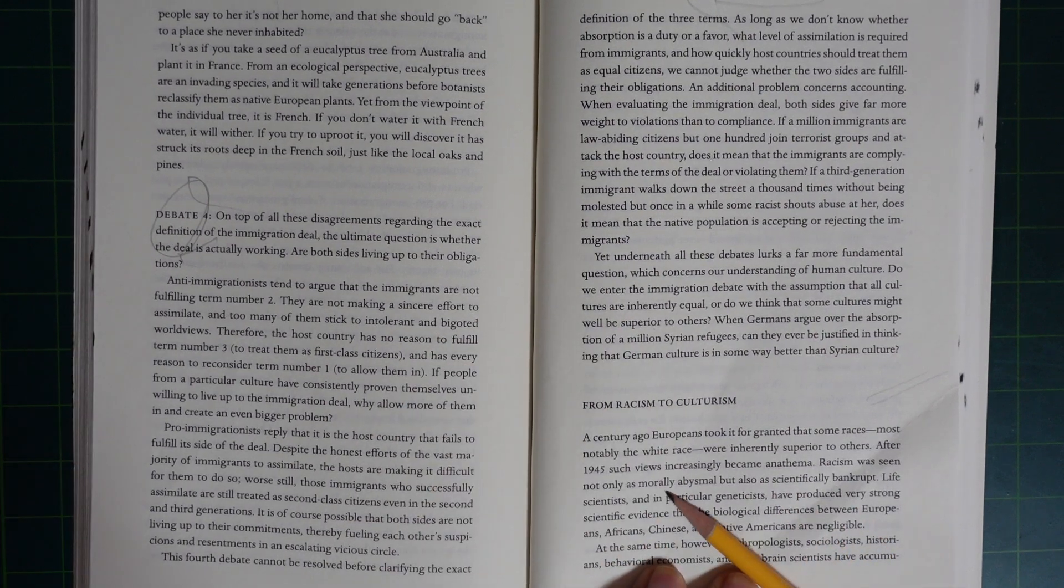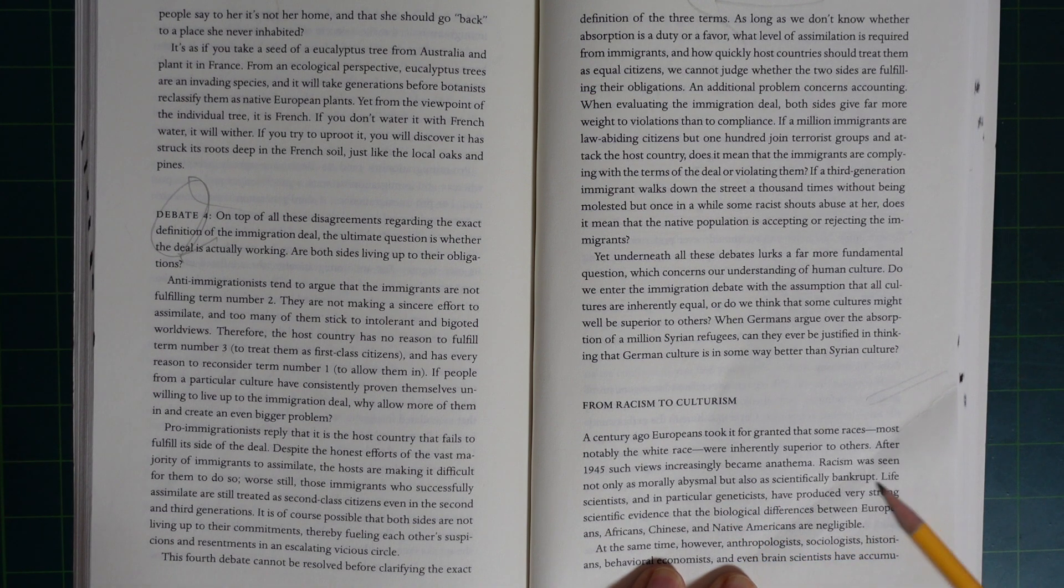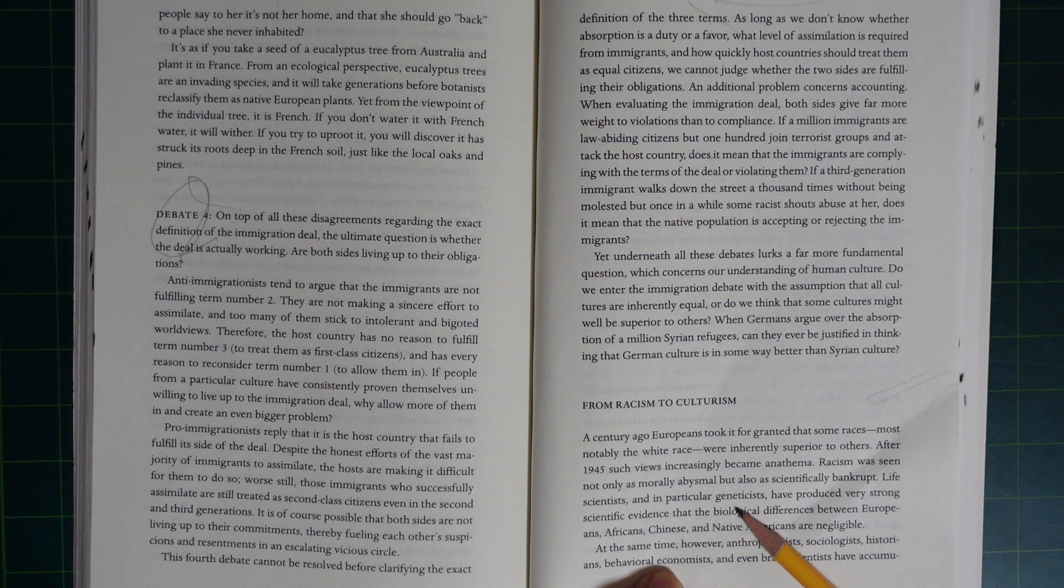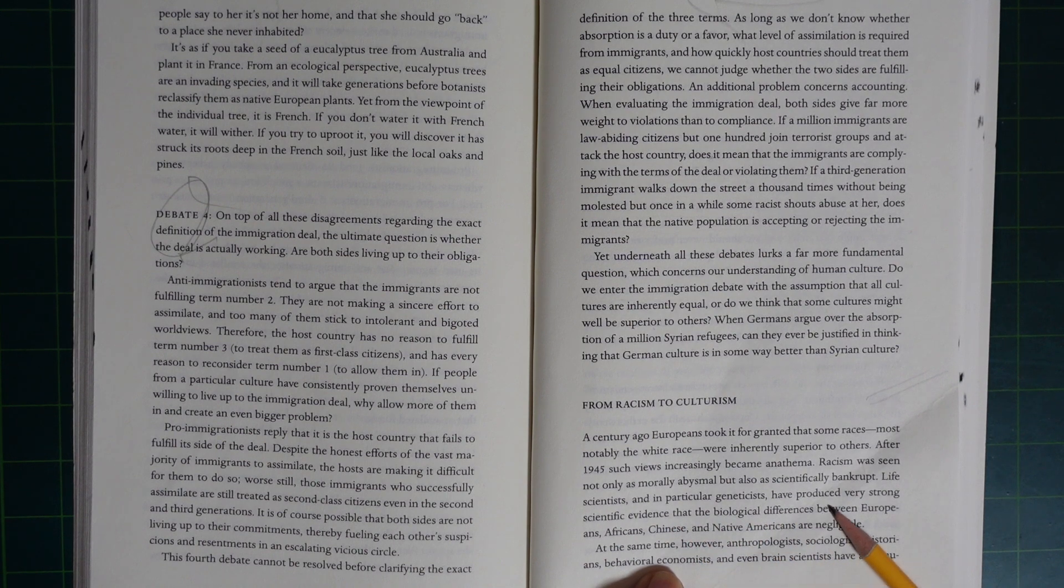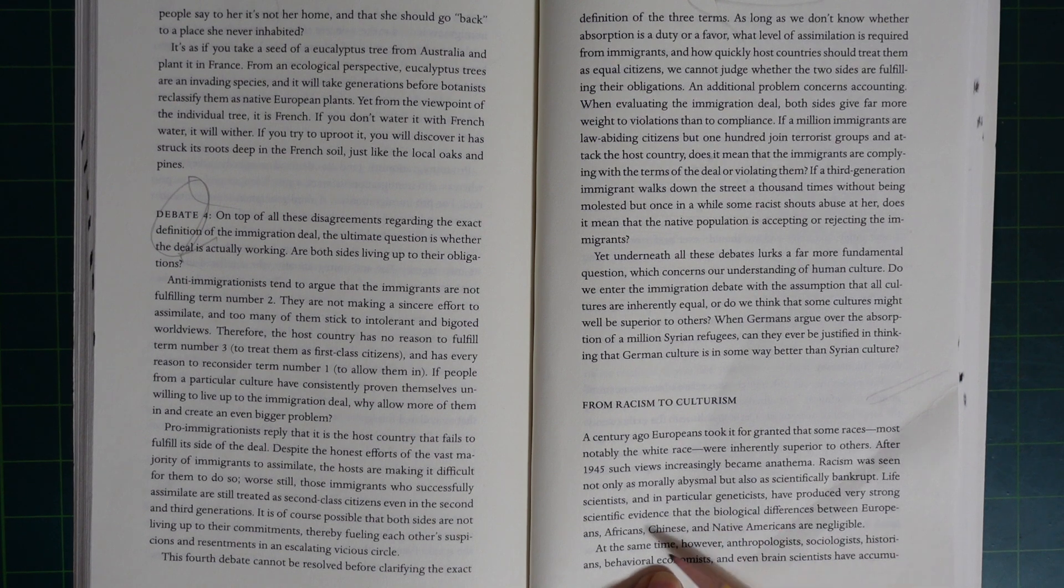Racism was seen not only as morally abominable, but also scientifically bankrupt. Life scientists and in particular geneticists have produced very strong scientific evidence that the biological differences between Europeans, Africans, Chinese and Native Americans are negligible.